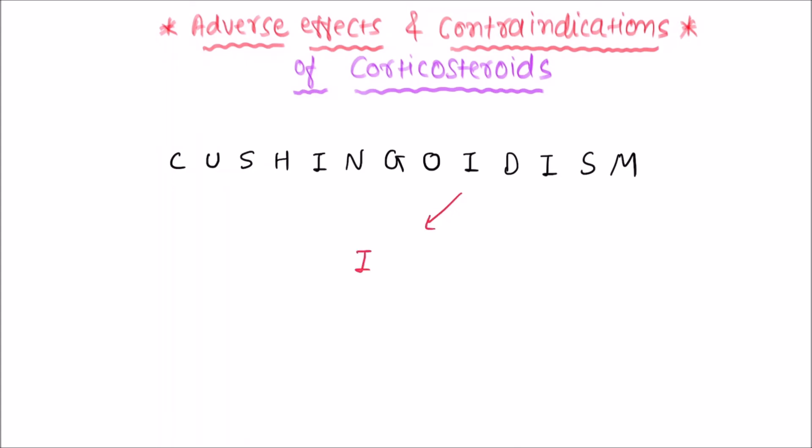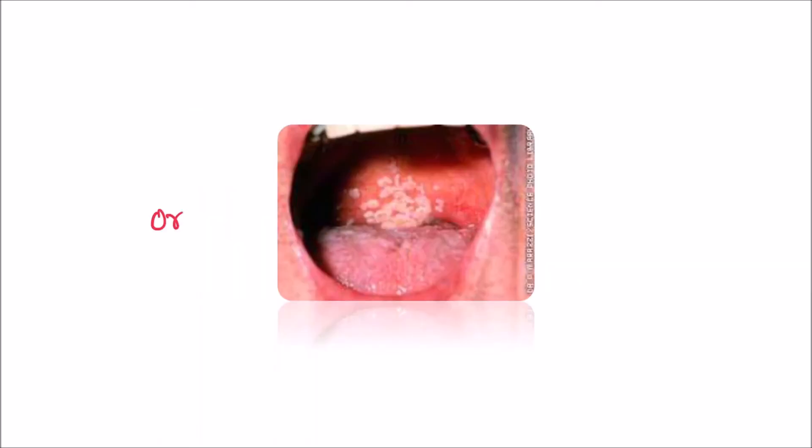Next from I, infections. Because of immunosuppression, there are chances of developing opportunistic infections. One of the common organisms is fungi Candida. Oral candidiasis is a common complication of inhaled corticosteroids, which can be prevented by advising patient to do gargles after each dose of inhaled steroid.